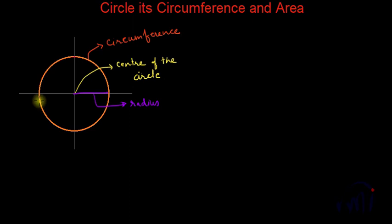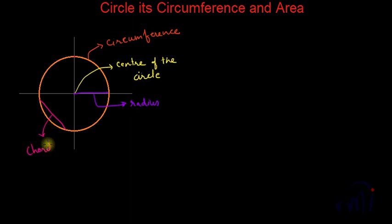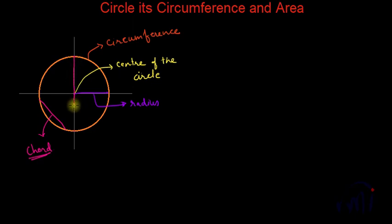And if I draw a line from one point of the circle to another point on the circle, this line is known as the chord of the circle. The biggest chord which can be drawn in a circle is actually the chord which includes the center also.